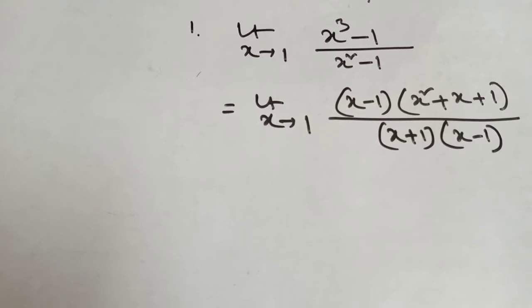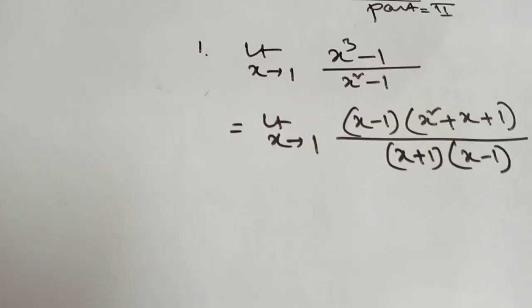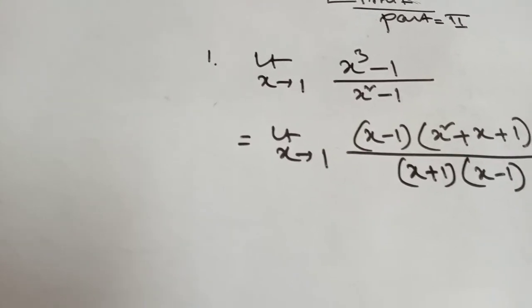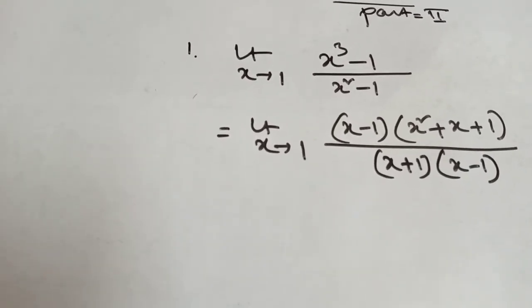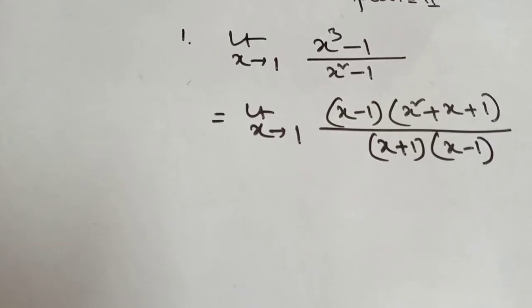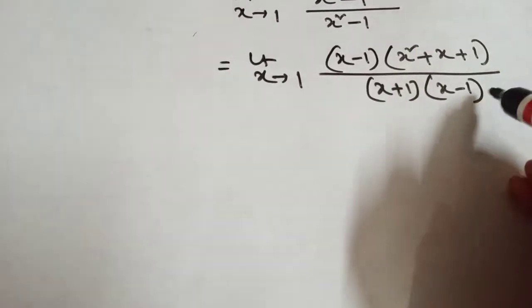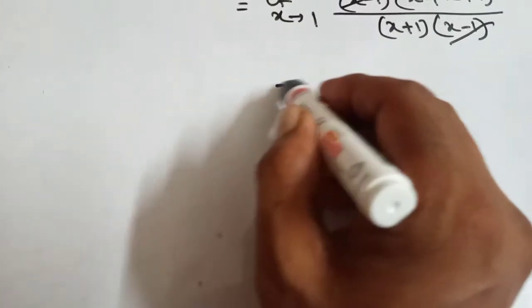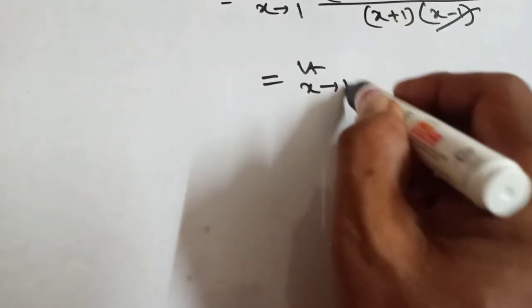That means x cube minus 1 uses the a cube minus b cube formula: a minus b into a square plus ab plus b square. And x square minus 1 uses the a square minus b square formula: a plus b into a minus b. The common factor (x minus 1) in numerator and denominator cancels.